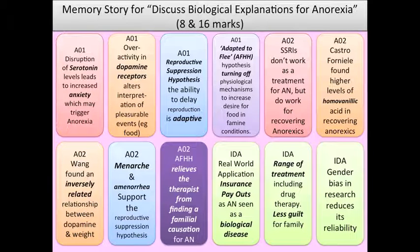The girls want to speak to a therapist about their parents not protecting them from the boys, but the therapist says he does not need to see them. This represents the fact that biological explanations mean therapists don't need to speak to people about familial issues — because the cause is biological, not related to the family.